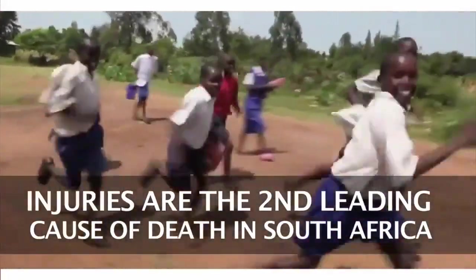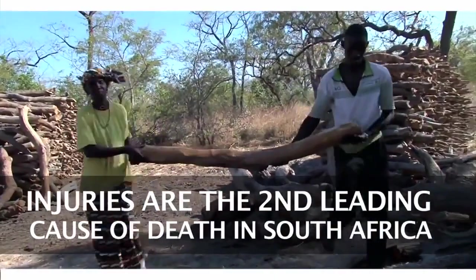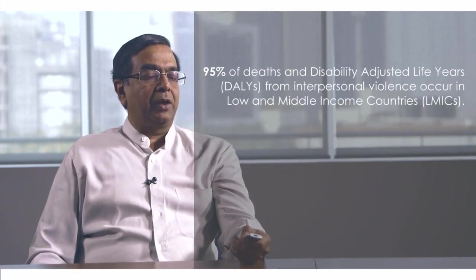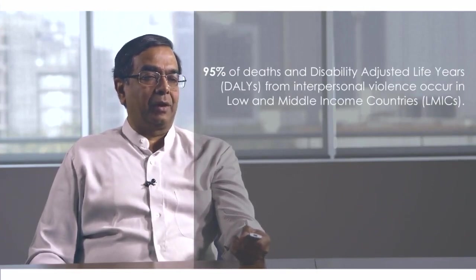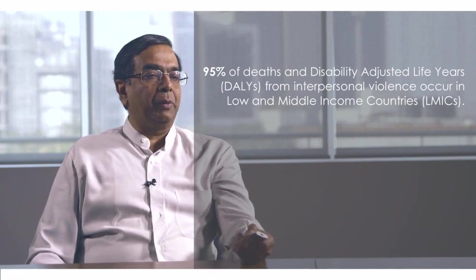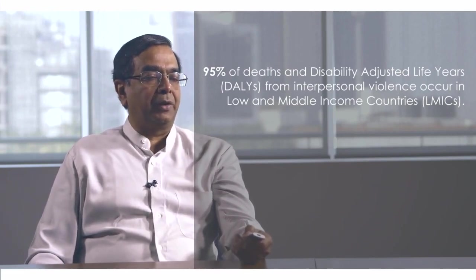South Africa has injuries as the second leading cause of death in that country. About 95% of deaths and disability-adjusted life-year loss from interpersonal violence — often due to fights or homicide occurring between people — are found in low- and middle-income countries.